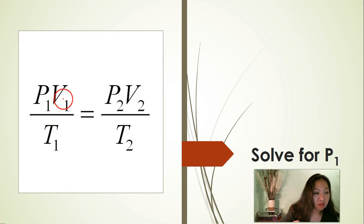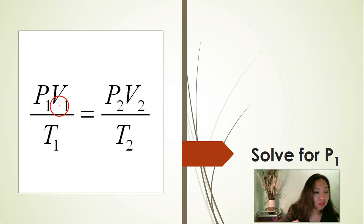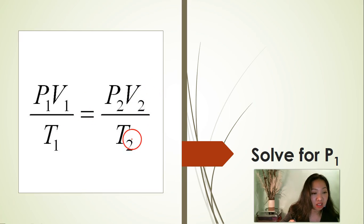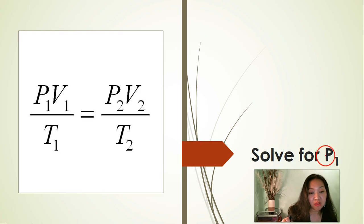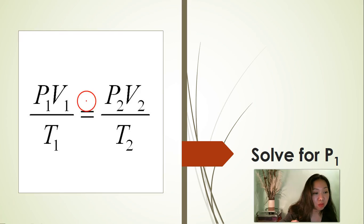Here are the individual formulas: P1 times V1 is equal to P2 times V2 is the Boyle's law formula. V1 divided by T1 is equal to V2 divided by T2 is the Charles's law formula. P1 divided by T1 is equal to P2 divided by T2 is the Gay-Lussac's law formula.